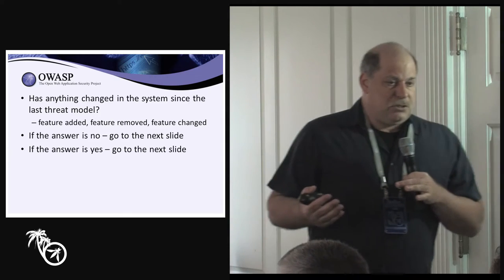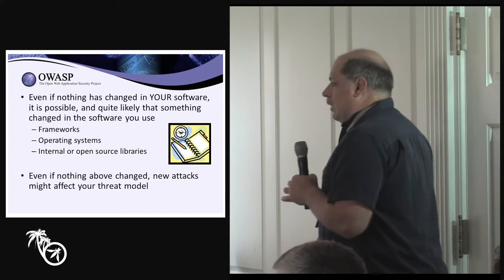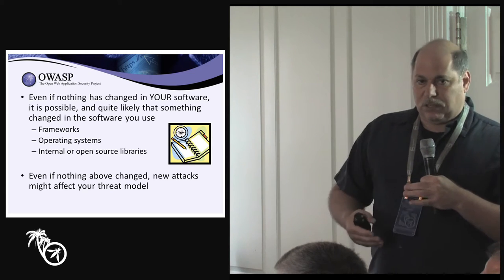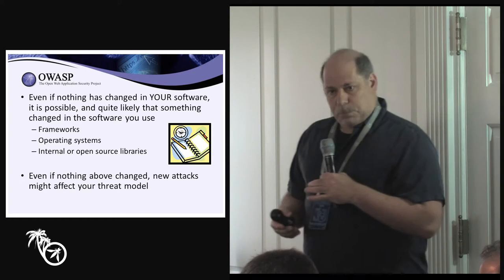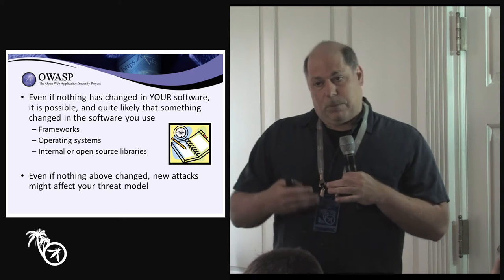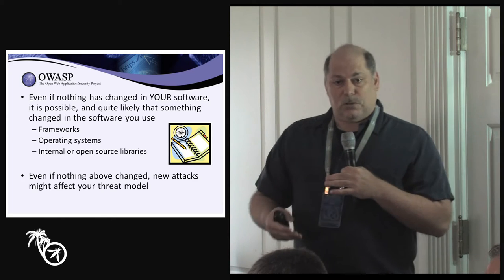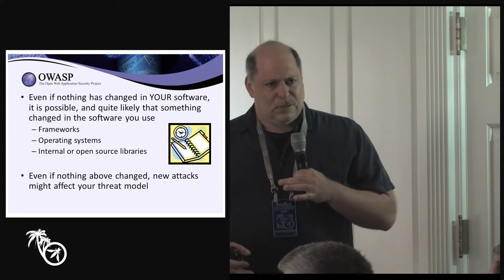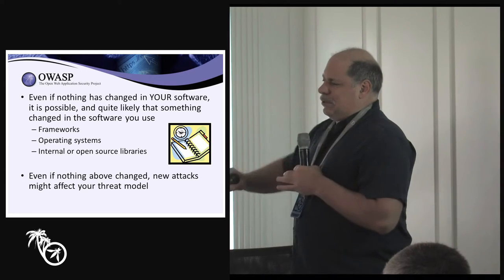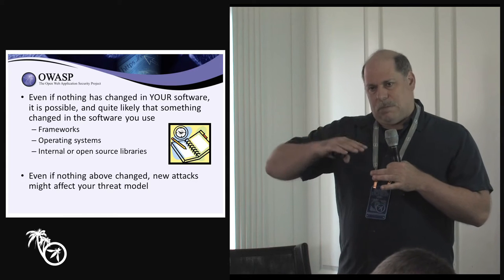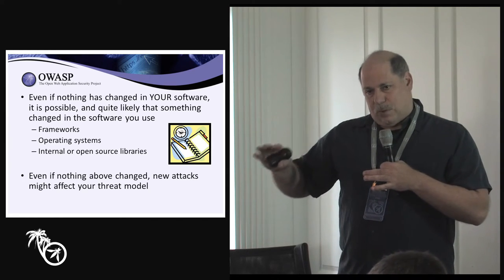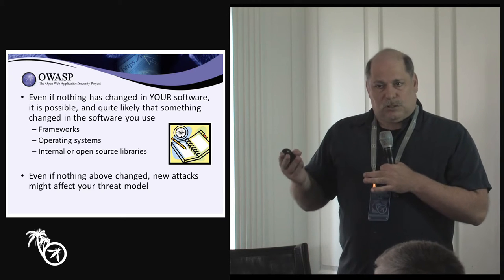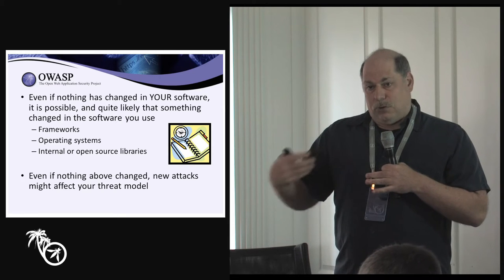Even if nothing has changed in your software, the universe is changing. Your software is built on top of other software, and that software has problems. Sometimes those problems are severe enough that you have to put a compensating control in your design. Something breaking in a framework or OS — even if you're at the application layer — still matters to how you interact with it.